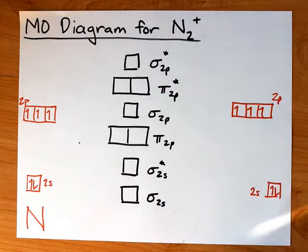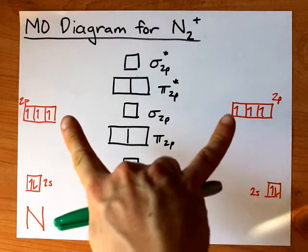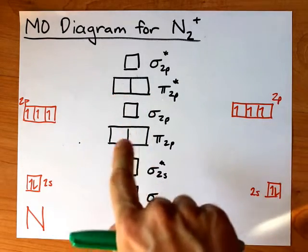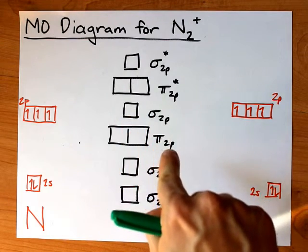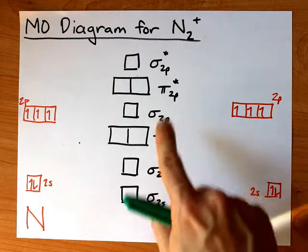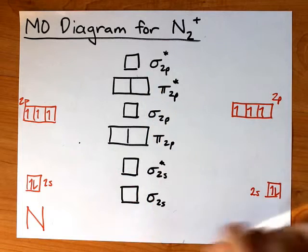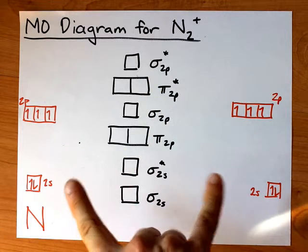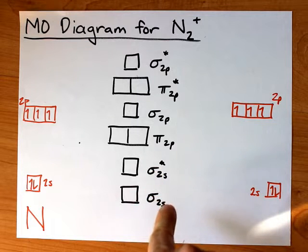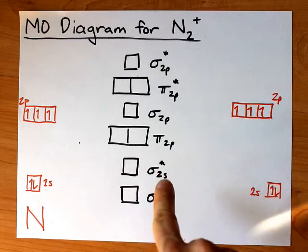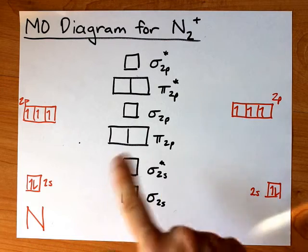One has been removed. The 2p atomic orbitals overlap to create this set of 6 sigma and pi 2p molecular orbitals, both bonding and antibonding, and the 2s atomic orbitals overlap to make the sigma 2s and sigma antibonding star 2s molecular orbitals.